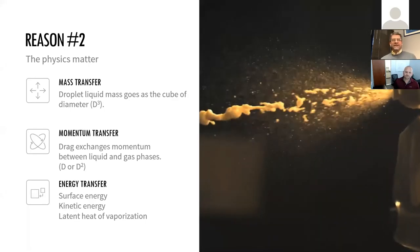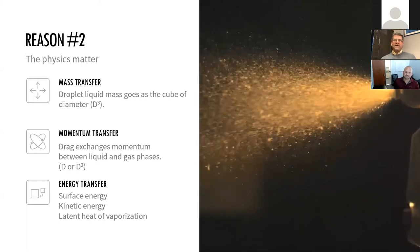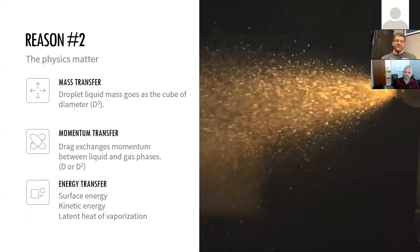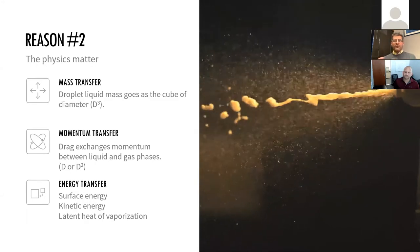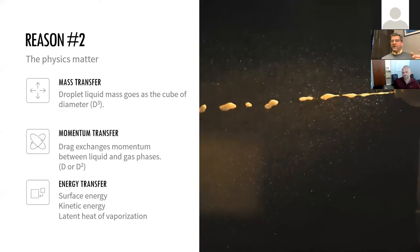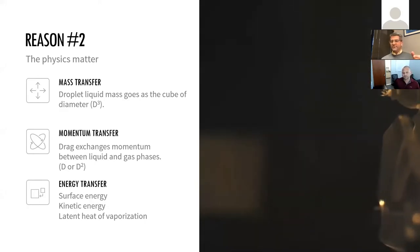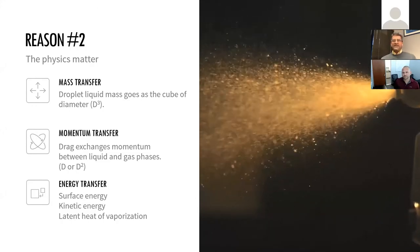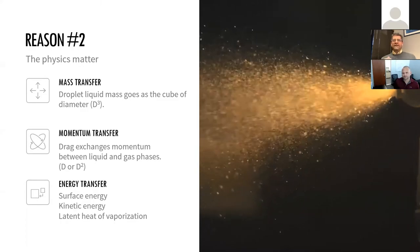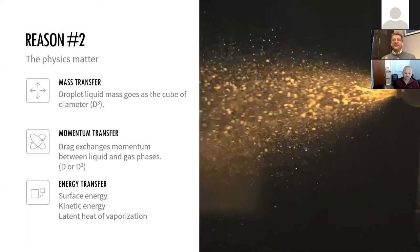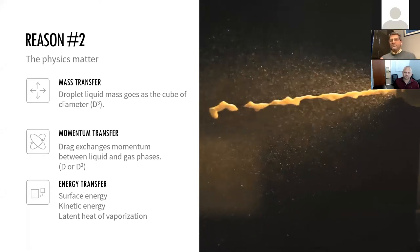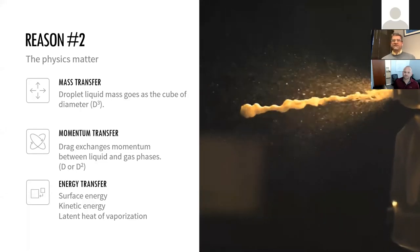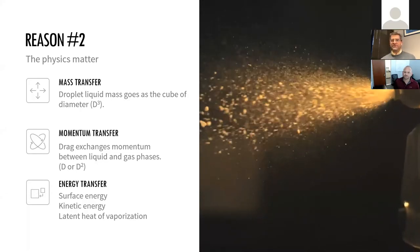The important takeaway is that momentum exchange as drag goes as either the diameter or diameter squared, depending on whether we're at a low Reynolds number creeping flow or turbulent flow. Mass transfer goes as D cubed. So larger drops are accelerated by their drag forces less sensitively than smaller drops — which is to say smaller drops match the gas phase faster. This becomes very important when we talk about crossing streamlines or successfully applying droplets to surfaces.